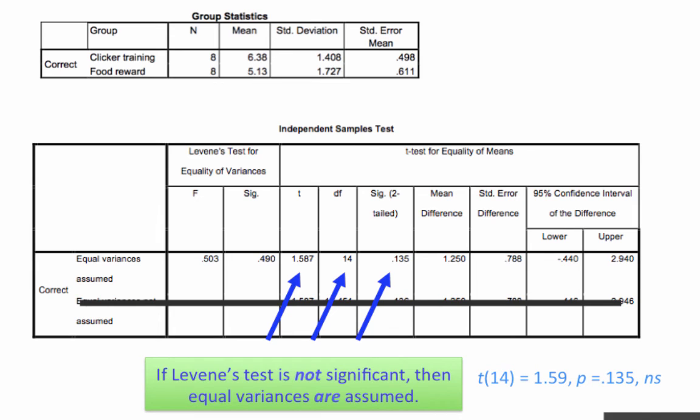So let's go back. We're interpreting off the top row. We have a t-value, a degrees of freedom, and a significance value of 0.135. Here's how we would write up those results. t with 14 degrees of freedom, so the 14 is in parentheses, equals 1.59. I've rounded up 1.587 to 1.59. p equals 0.135. That number comes from the SIG two-tailed box. ns, not significant. If you look closely, you'll notice that the t, the p, and the ns are all in italics.